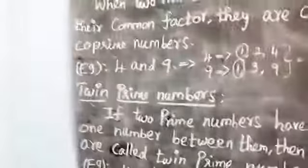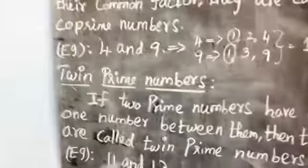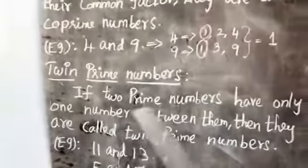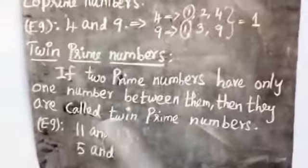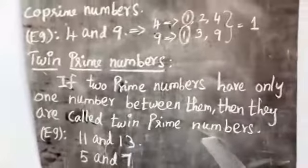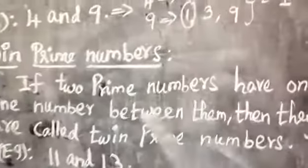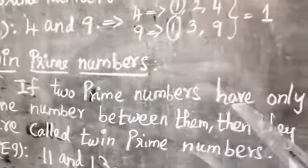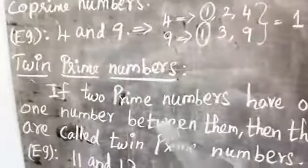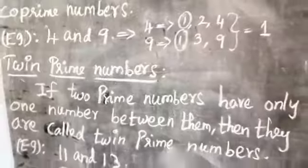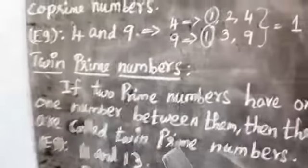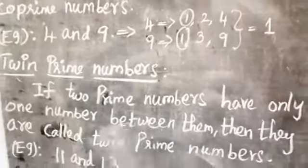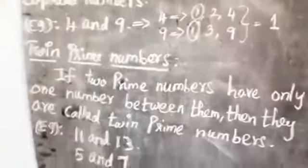So twin prime numbers means if two prime numbers have only one number between them, then they are called twin prime numbers. If you take any two prime numbers that have only one number between them, that is called twin prime numbers.